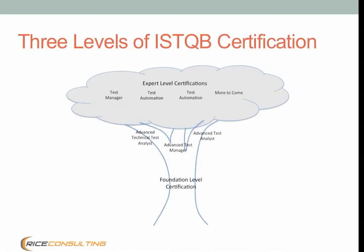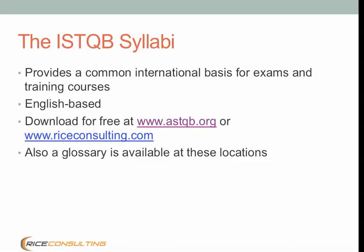There are three levels of ISTQB certification: the foundation, advanced, and expert levels. Everyone starts at the foundation level, and from that point you can take any of the advanced certifications, and once you have an advanced certification, you can take the expert-level certifications. Each level is based on a common syllabus written by a large number of international software testing practitioners and experts. You can download these syllabi for free at astqb.org or riceconsulting.com.